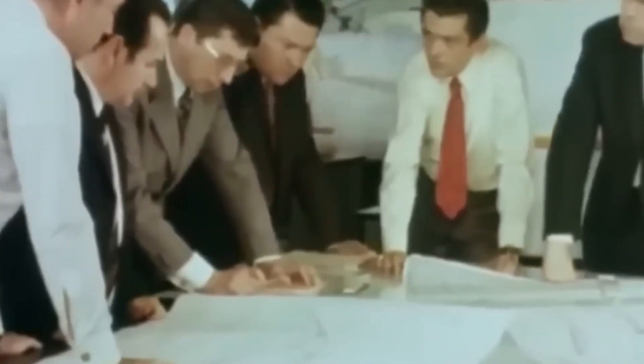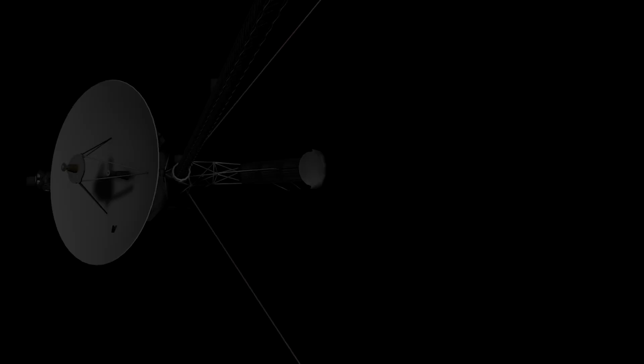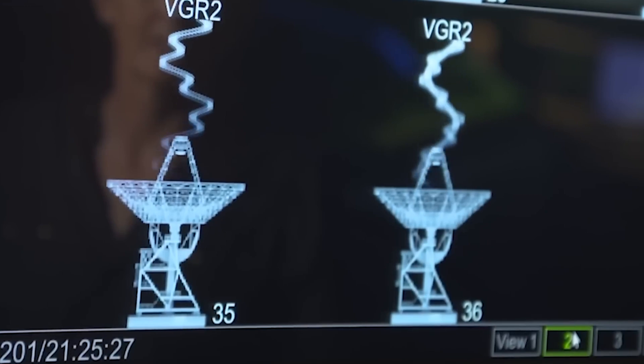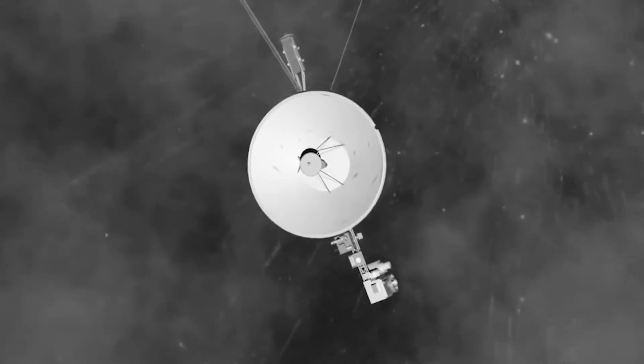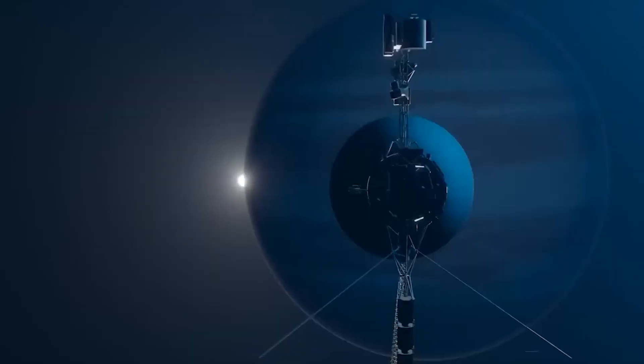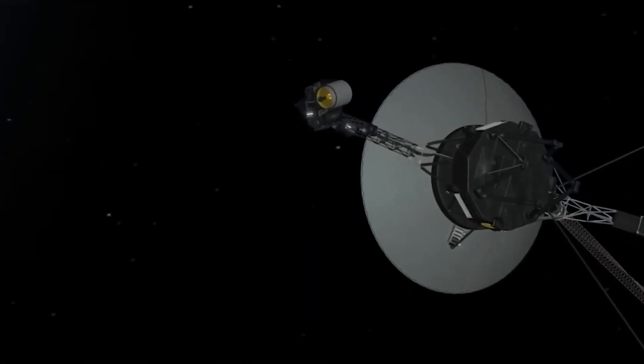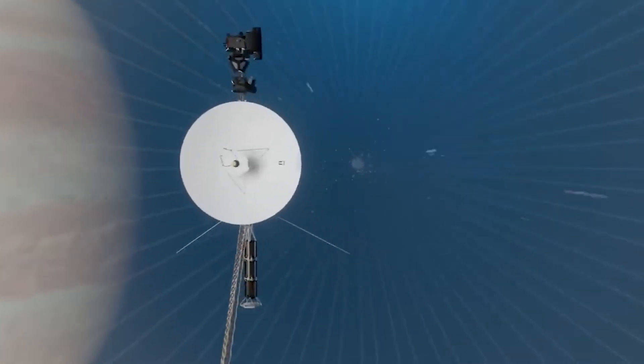However, the rest of the spacecraft remained operational and continued to collect data. Engineers acted quickly and sent a command to Voyager 1 instructing the AACS system to shift to the correct computer to transmit the telemetry data. Although the solution was low risk, it required a great deal of patience because of the significant delay caused by the distance between Earth and Voyager 1. Radio signals take nearly 22 hours to travel back and forth, so the troubleshooting process required careful coordination.